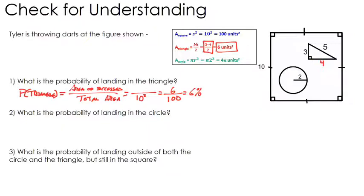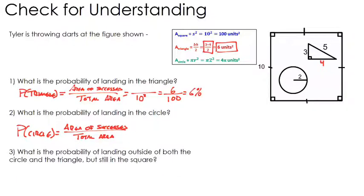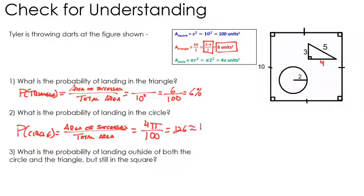Now what's the probability of landing in the circle? The probability of landing in the circle is the area of the circle over total area. The area of the circle is π r², and the radius is 2, so the area is 4π. That's our area of successes out of our total area of 100. This works out to approximately 0.126, which is roughly 13%.